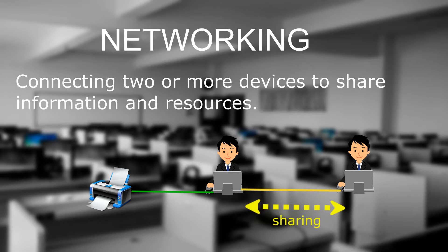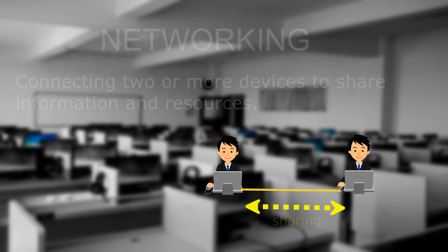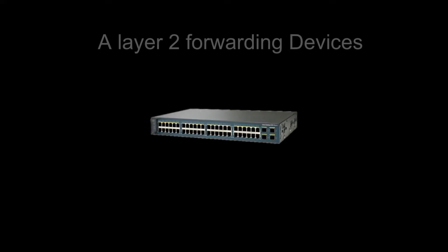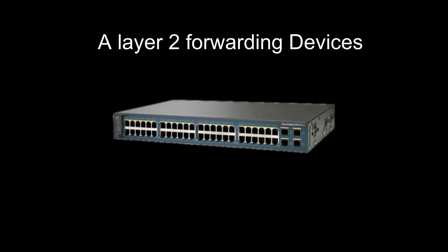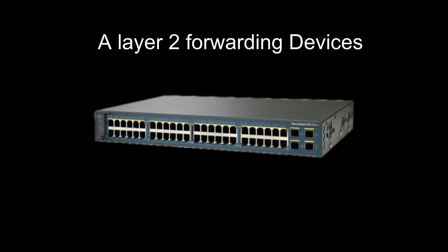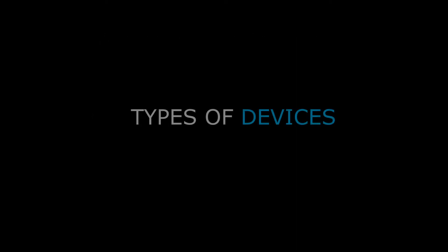Connecting only two devices is the simplest form of network. But what if we need to connect more than two devices? We would need a central device, more likely a switch. Before that, let's check out the types of devices used in a network.